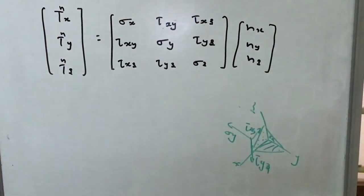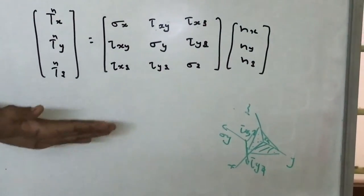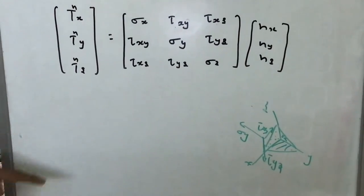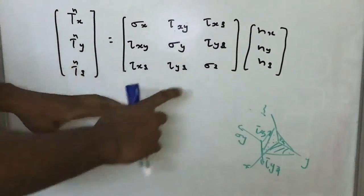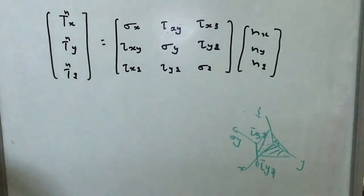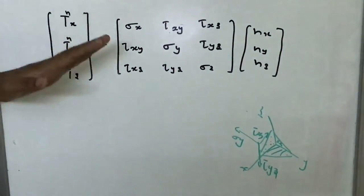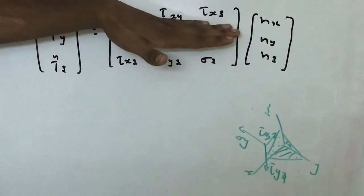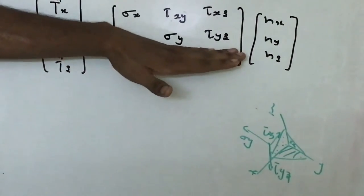So if we have the component of stresses in three mutually perpendicular planes, then we can write them in a matrix form as shown here. So after writing it, now what we have is, we have the stress in x plane, that is sigma x, tau xy, tau xz; in y plane and in z plane.